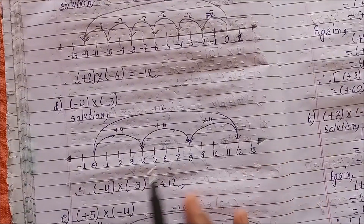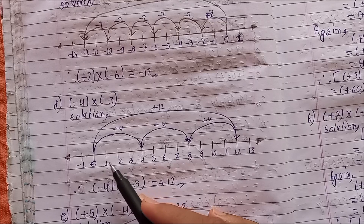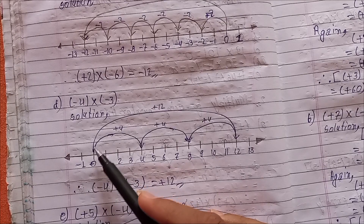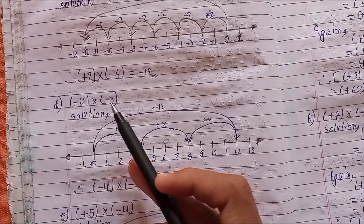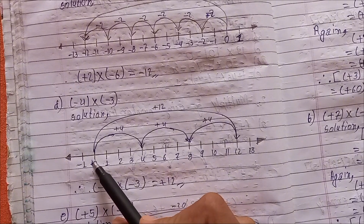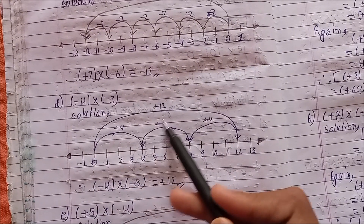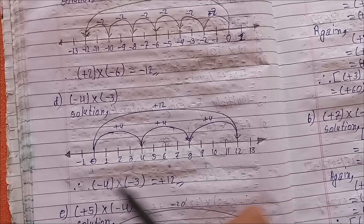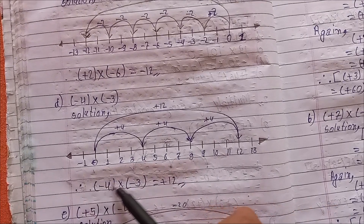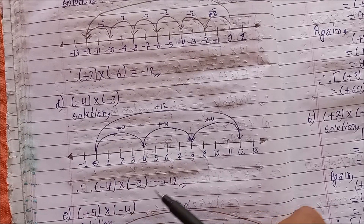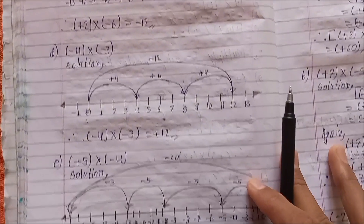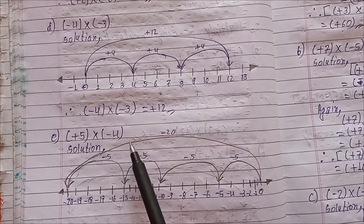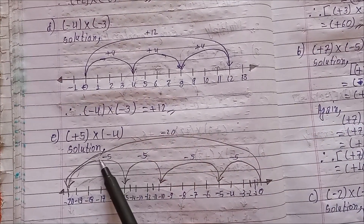minus 4 multiplied by minus 3: taking steps minus 1, plus 1, plus 2 — one, two, three. Therefore, minus 4 multiplied by minus 3 equals plus 12. (e) plus 5 multiplied by minus 4. Solution: